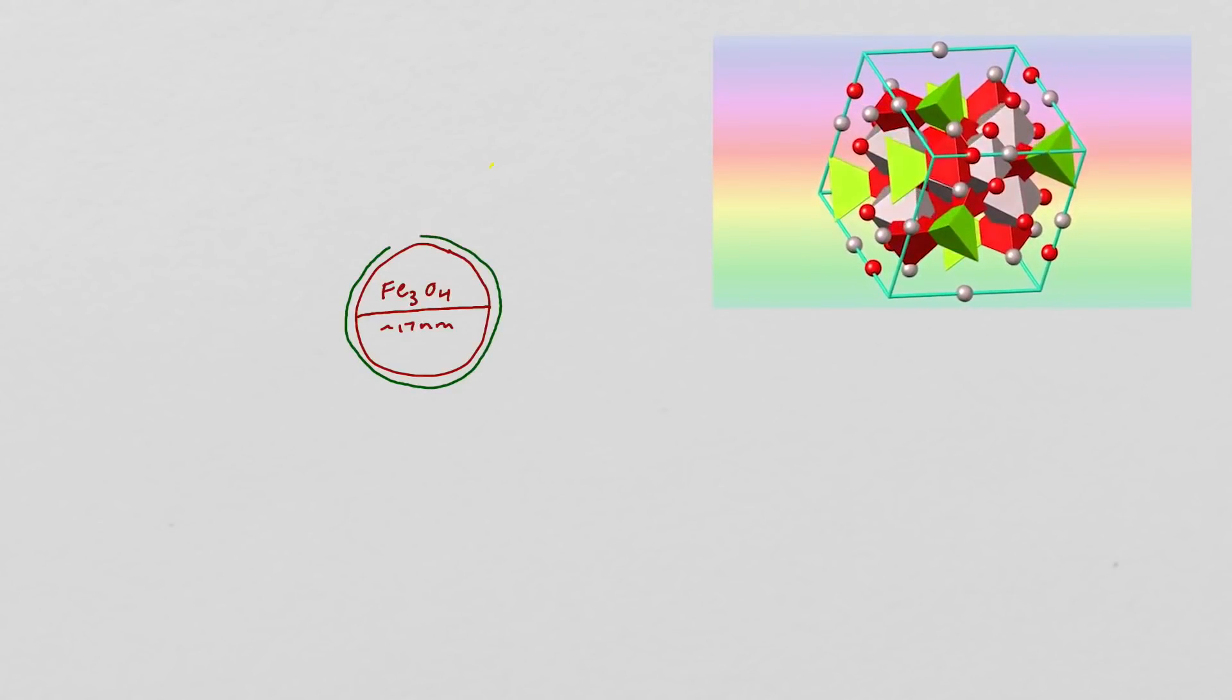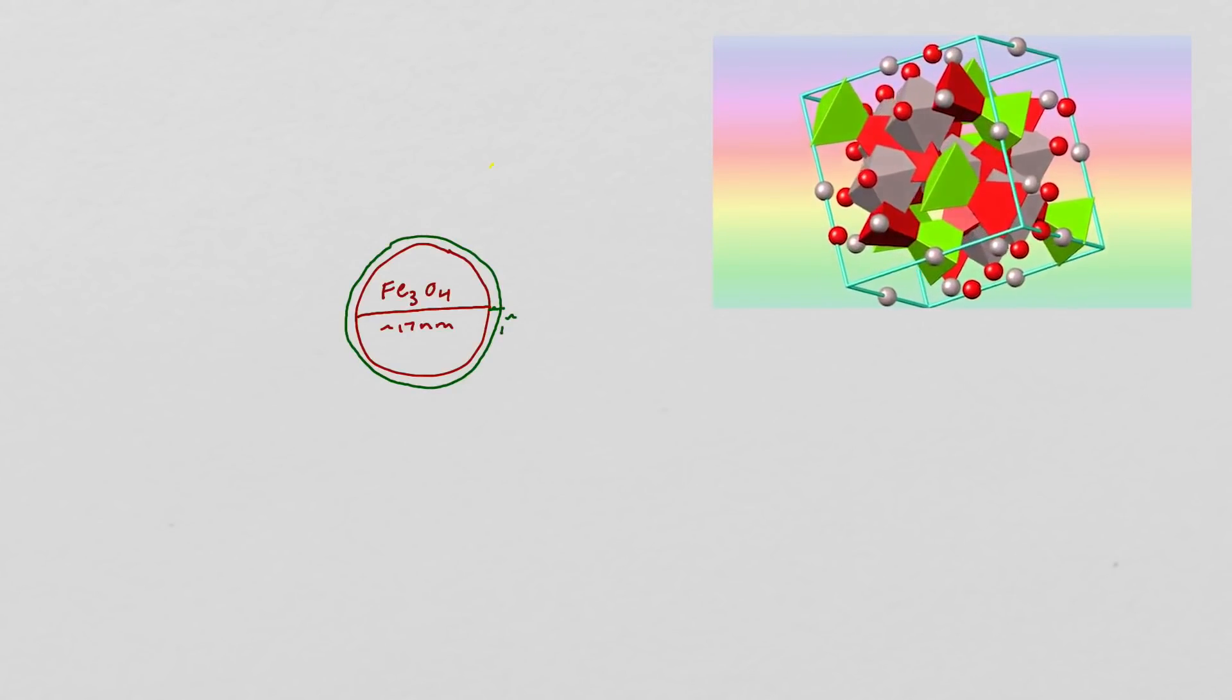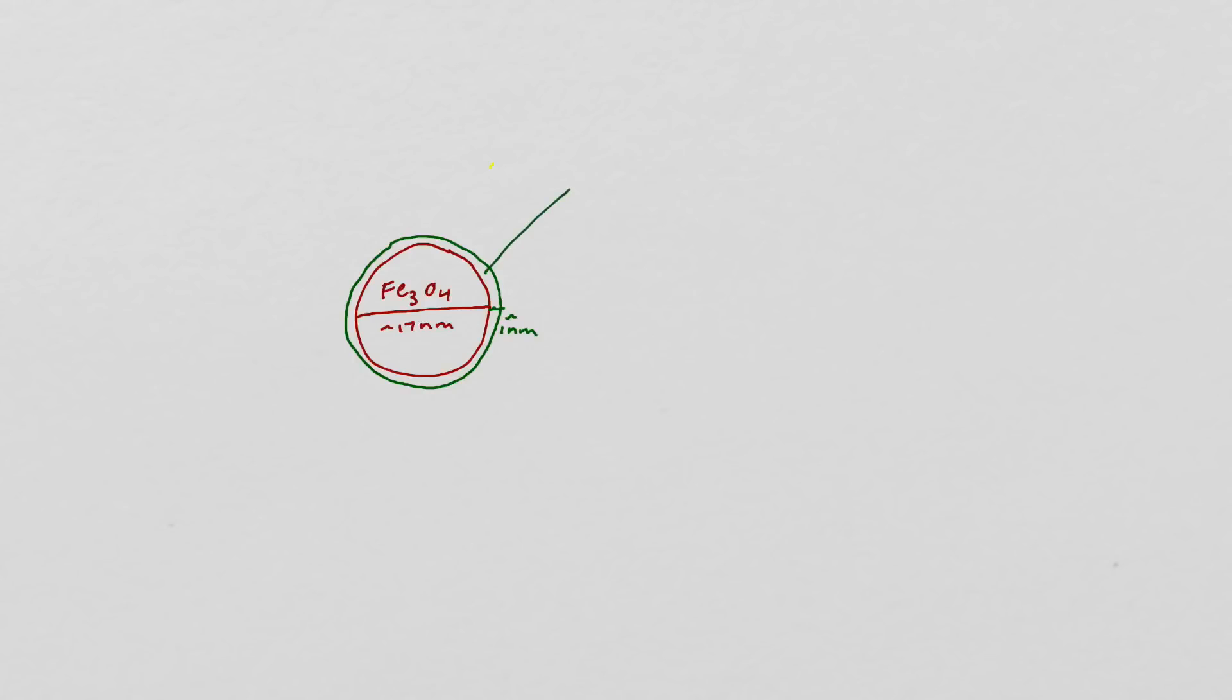The iron oxide core of the MNP is 17 nanometers in diameter. This small size lends to the particle's superparamagnetic behavior. The core has a cubic spinal structure, with the oxygen atoms arranged in an FCC lattice. The next layer of the particle consists of a substance that stabilizes the molecule.